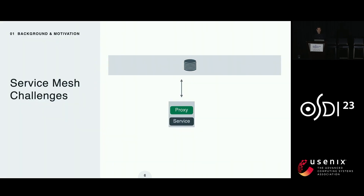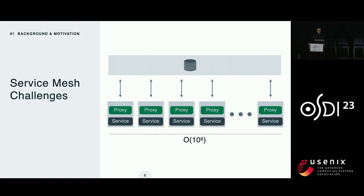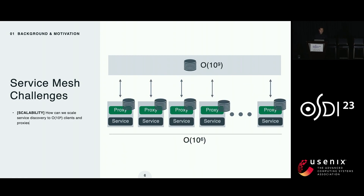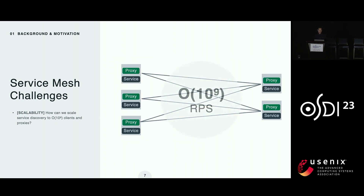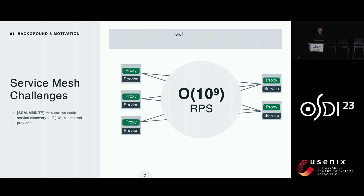Most service meshes also employ a central controller which directly configures each sidecar proxy's routing table. But Meta hosts tens of thousands of services, which are massively replicated, resulting in millions of geo-distributed RPC clients and L7 proxies. So it becomes a challenge to scale to millions of clients with a global service mesh. Moreover, Meta's service mesh needs to support billions of requests per second, but this incurs insurmountable hardware costs.